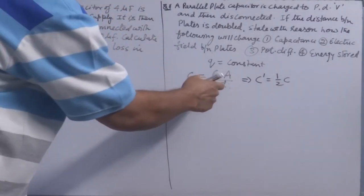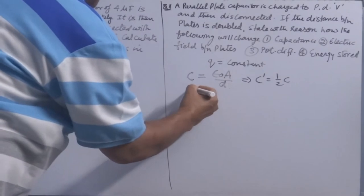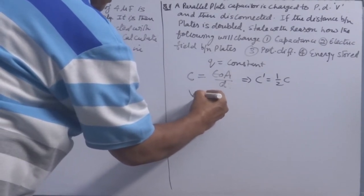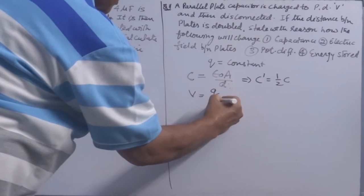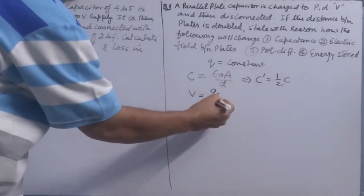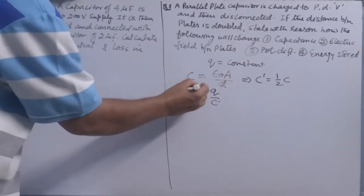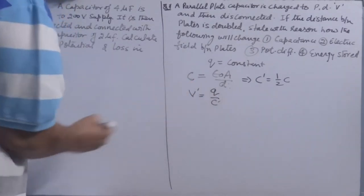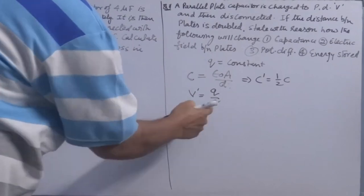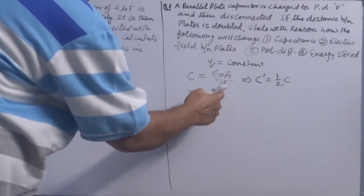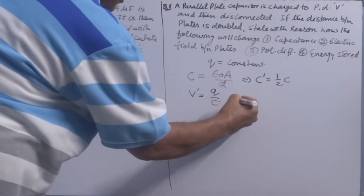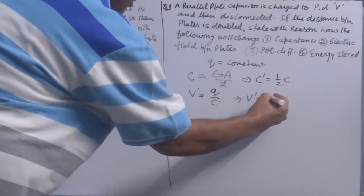Now for potential difference: V = Q/C. Charge remains constant, so the new potential V' = Q/C'. Since capacitance has become half and charge is constant, the new potential difference becomes 2V.